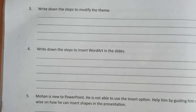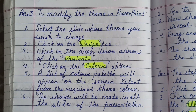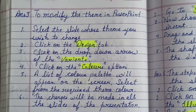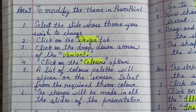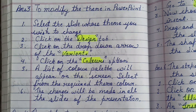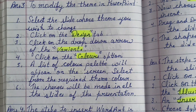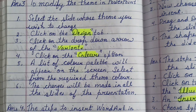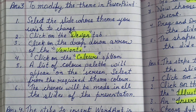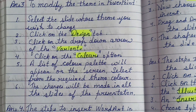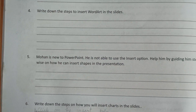Question three: Write down the steps to modify the theme. To modify the theme in PowerPoint: number one, select the slide whose theme you wish to change; number two, click on the Design tab; number three, click on the drop-down arrow of the Variants; number four, click on the Colors option; number five, a list of color palettes will appear — select the required theme color; number six, the changes will be made in all the slides of the presentation.